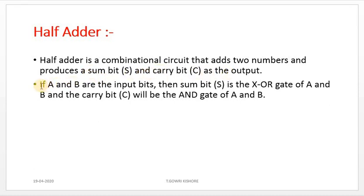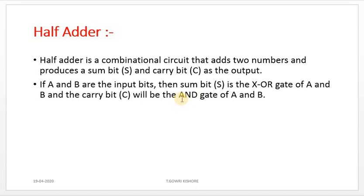If A and B are the input bits, the sum-bit is the XOR gate of A and B, and the carry-bit C will be the AND gate of A and B. So the sum-bit is represented as an XOR gate and the carry-bit is represented as an AND gate of A and B inputs.